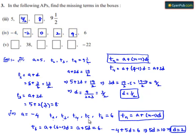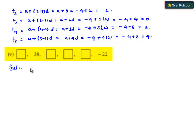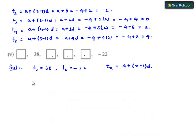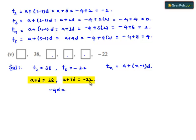Moving on to the fifth bit: the first term is not given, t2 = 38, and t6 = -22. Using the AP formula, T2 gives a + d = 38, and T6 gives a + 5d = -22. Subtracting: (a + d) - (a + 5d) = -4d = 38 - (-22) = 60, so d = 60 / (-4) = -15.